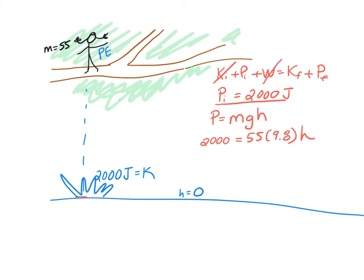Oh, let me show you how to do the math, because some of us get stressed by that. Okay, so I'm going to do 55 times 9.8. So that gets us 2,000 equals 539 height. And then we're going to divide by that 539. How high is this branch? And that comes out to 3.7 meters.